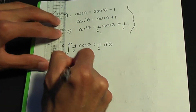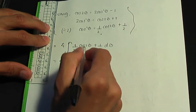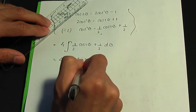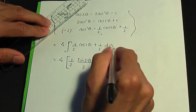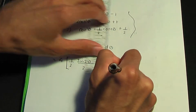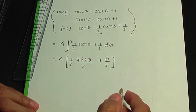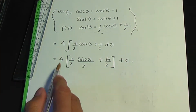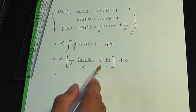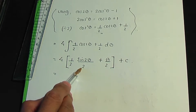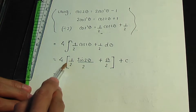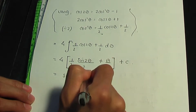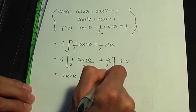Let's integrate. Integrating half cos 2 theta gives half times sine 2 theta divided by 2, and integrating half with respect to theta gives theta over 2. Since we have an indefinite integral, we add a constant of integration c. Multiplying out: the 1 over 2 times the 2 in the denominator gives 1 over 4, and 1 over 4 times 4 gives sine 2 theta. Plus, 4 times one half is 2, so we get 2 theta plus c.